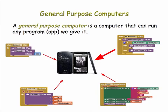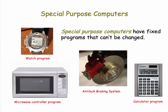General purpose computers are computers that can run any program we give them. So far you've given the device the Martin Luther King app, but you're going to be writing lots of other apps in this course. We contrast general purpose computers with special purpose computers. These are ones that have fixed programs that can't be changed, such as a watch or a calculator program, or the anti-lock braking system in your car.